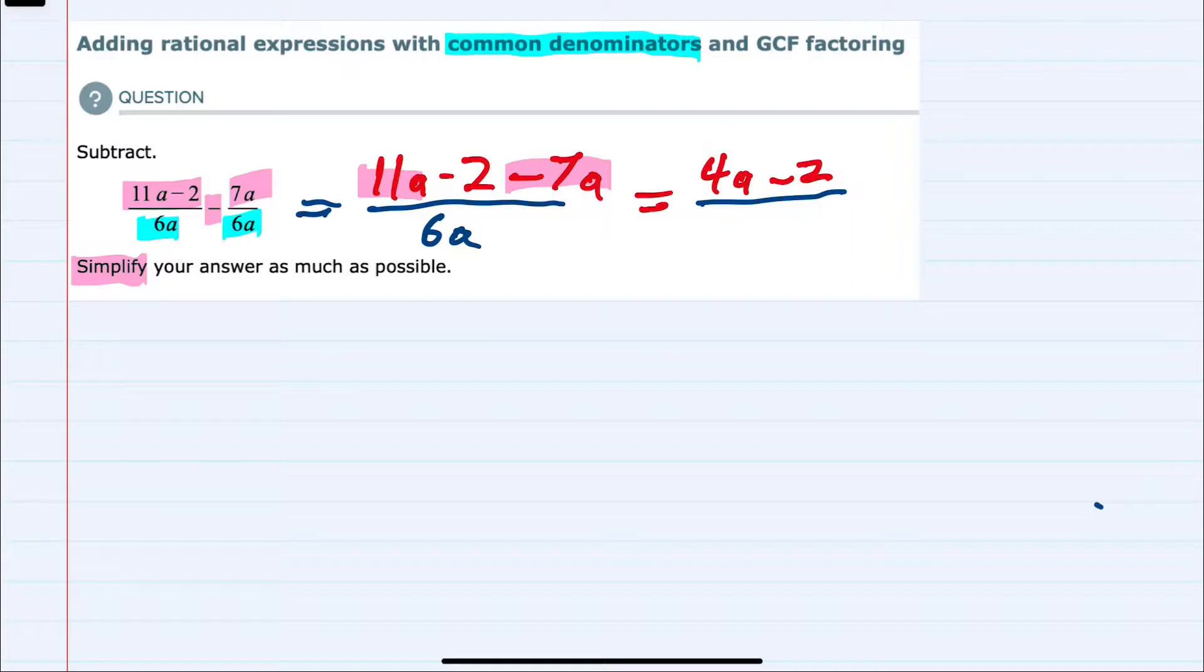We still have our denominator of 6a, but as was suggested in the title, the greatest common factor in our numerator, we have this 4a minus 2, we can take out a common factor. Both 4a and 2 have a 2 that we could factor out.